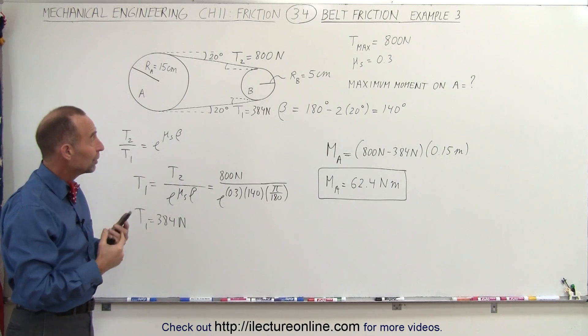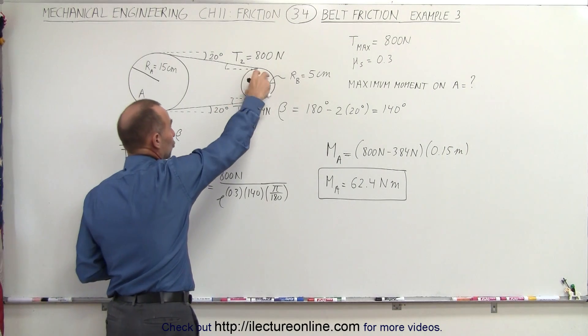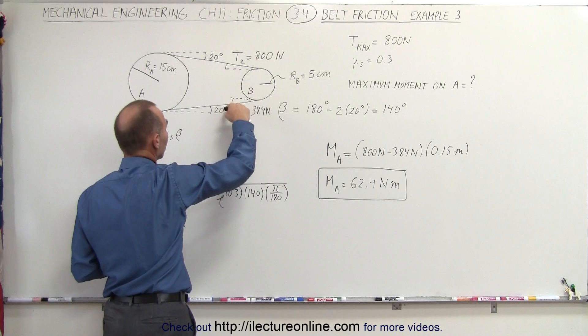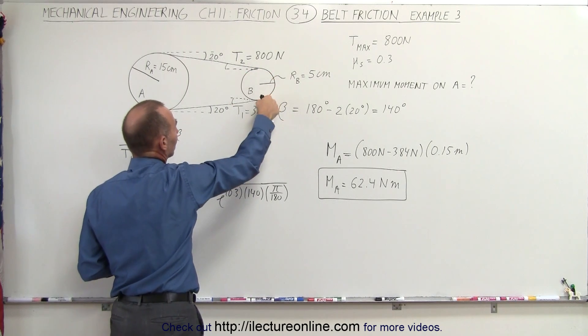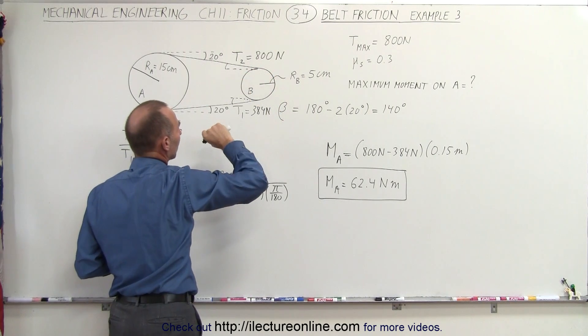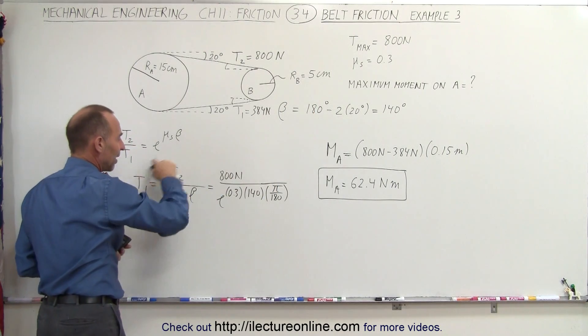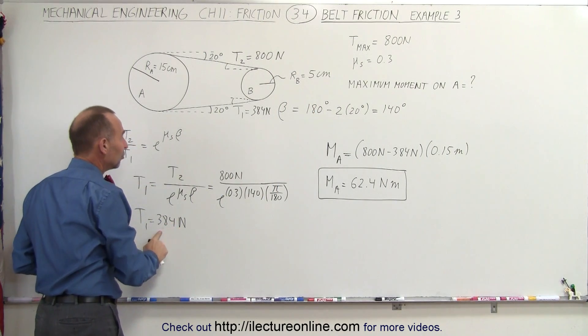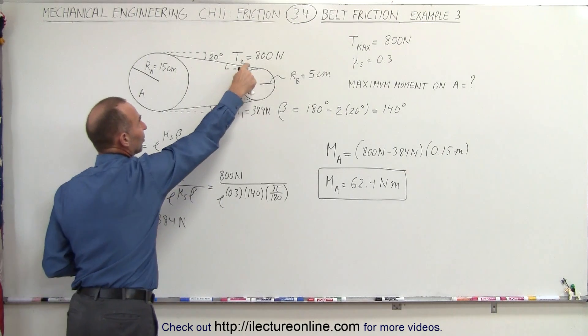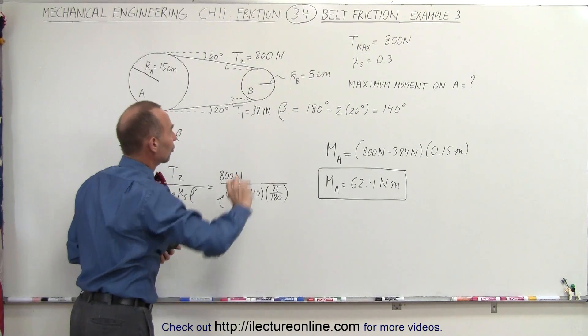So again, the way we do that is, this is the pulley that's driving the belt. We have an angle of contact, which is 180 minus 40. We have a coefficient of static friction, and then using the equation that we found, we can then calculate the tension on the other side of the belt if this tension here is a maximum of 800 newtons.